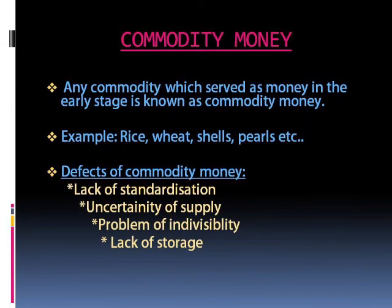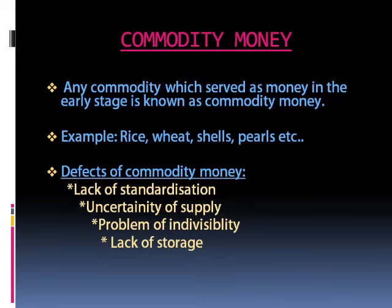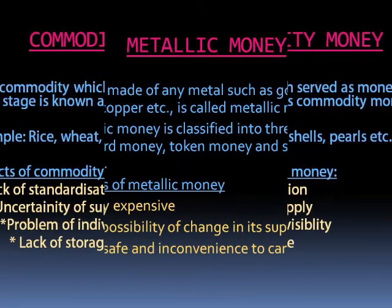Commodity money: Primitive money was first used in the form of commodity money — any commodity which served as money in the early stages of evolution. Examples include rice, wheat, shells, cattle, sheep, etc. The defects of commodity money are: lack of standardization, lack of storage, uncertainty of supply, and problems of indivisibility.